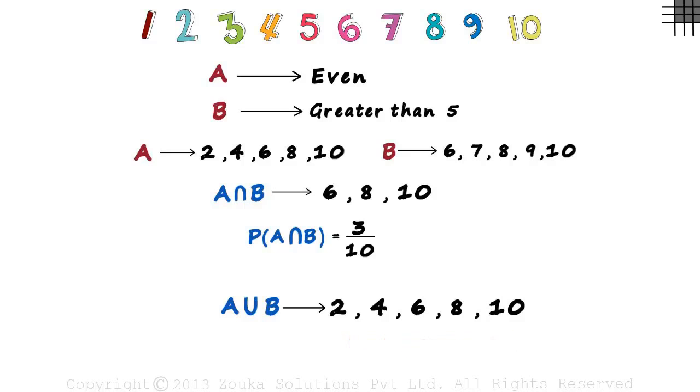The next number greater than five is seven, and that is not written, so we write a seven. Similarly, eight and ten are already included. What remains is nine. So these are the possibilities of event A or B happening. Seven in all.